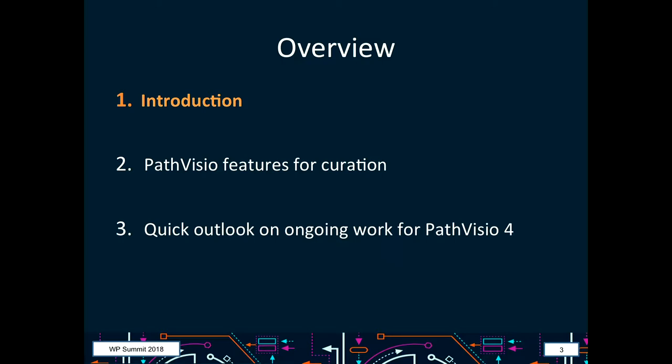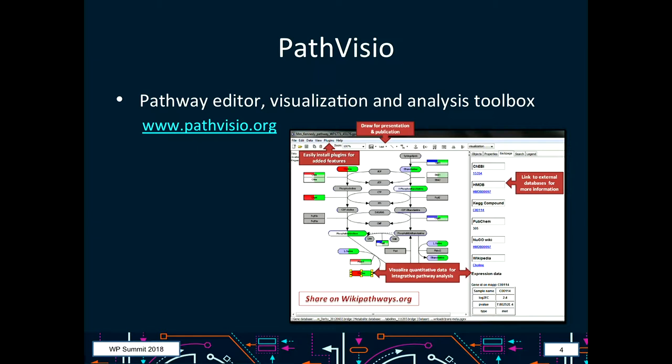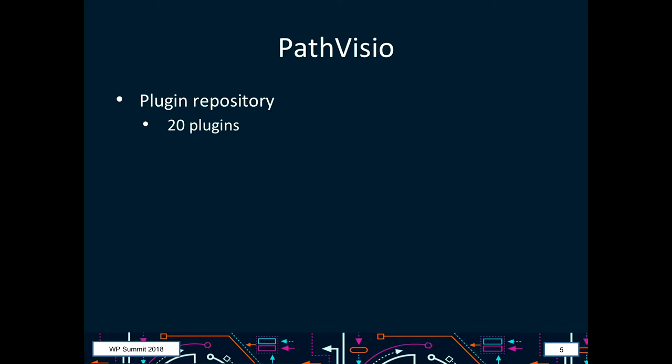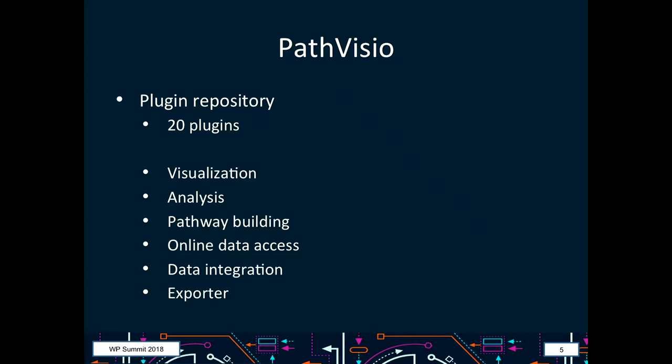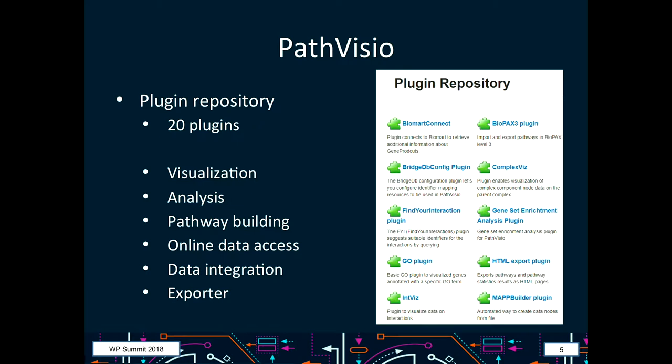I'll talk about three parts. I'll give you a quick introduction about PathVisio in general — I think most of you have heard or used it already — some highlights on features that PathVisio already has for curation, and a quick outlook on ongoing work for PathVisio 4. PathVisio is the pathway editor, analysis, and visualization tool linked to WikiPathways, so that's where we draw our pathways and then visualize and analyze our data. It's extendable by plugins, which makes it really easily extendable with additional features. Currently we have about 20 plugins with different focuses — from visualization to analysis to data integration, but also some focused on curation. The plugin repository shows all of them; you can simply install them from within PathVisio.